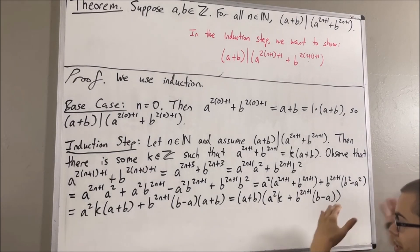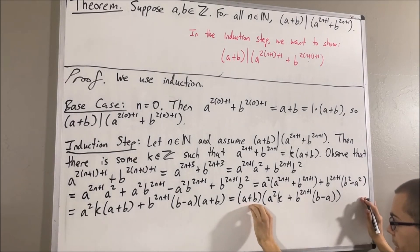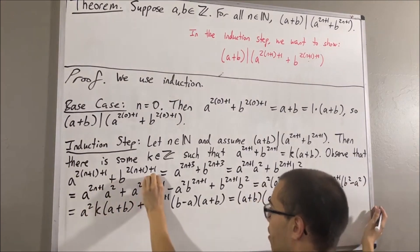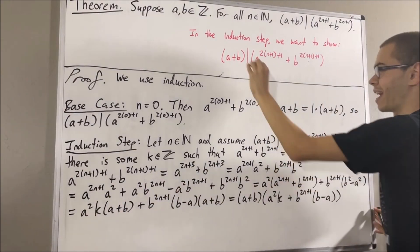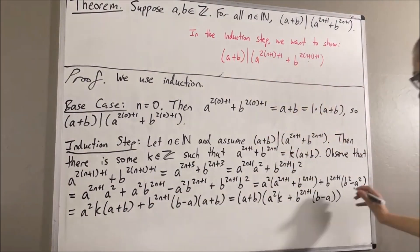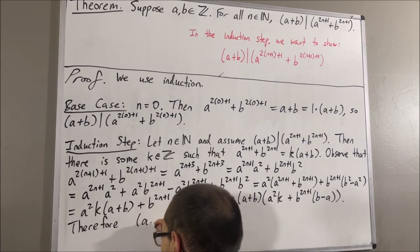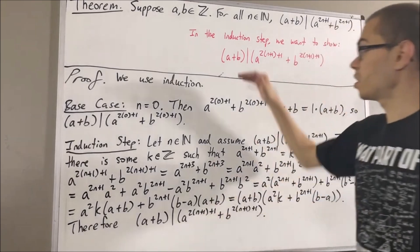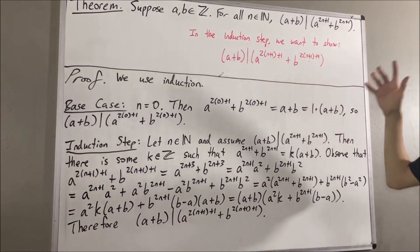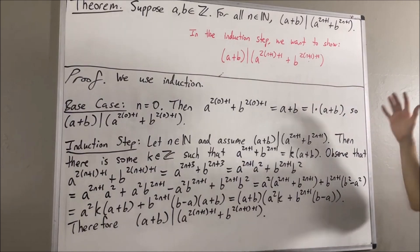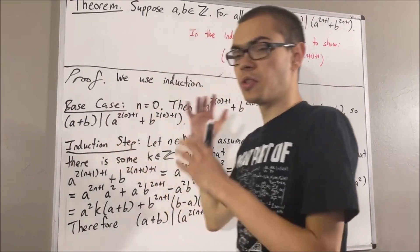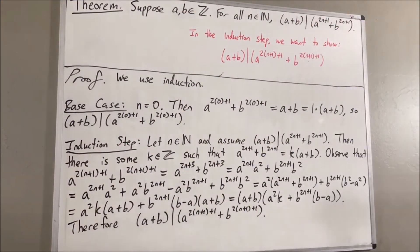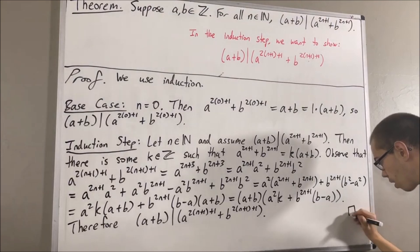As you can see, there is some integer such that A plus B times that integer gives this expression. Therefore A plus B divides it, which was the whole goal of the induction step, completing it. Because we've completed both the base case and the induction step, this closes the induction and we have proven the theorem.